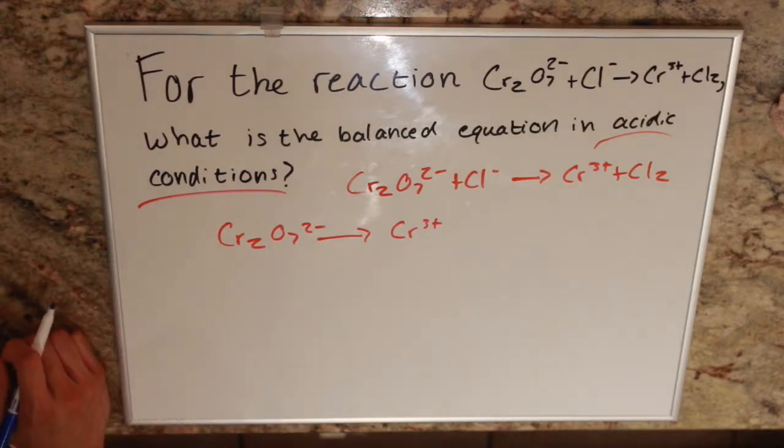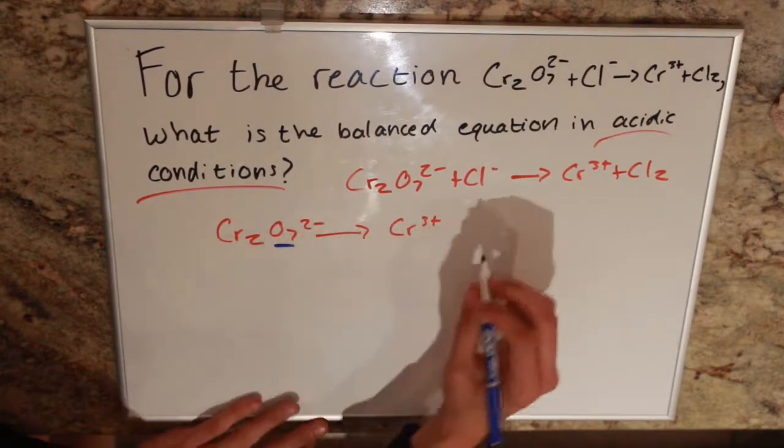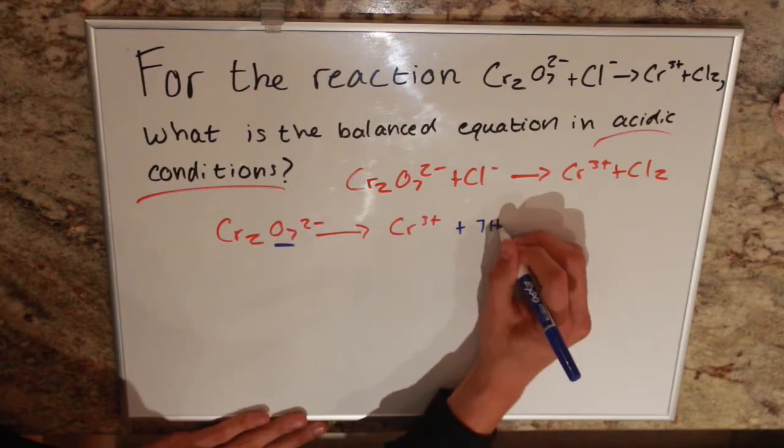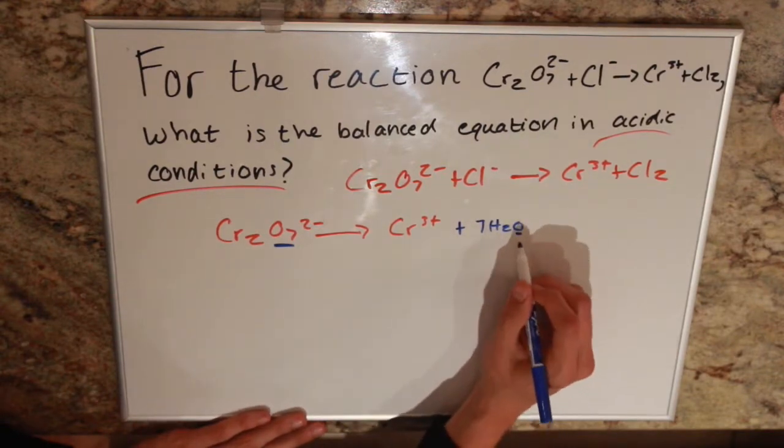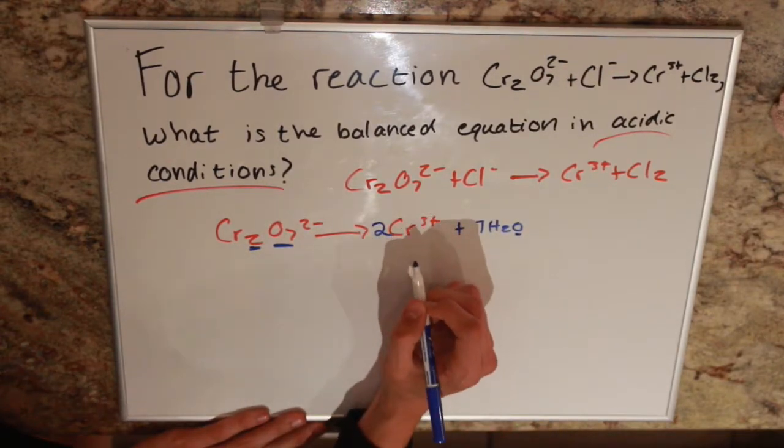So first thing we notice is our obvious imbalance in oxygens. So we're going to have to add 7 H2O so we can get those 7 oxygens. We also have 2 chromiums so we need 2 chromiums on this side.